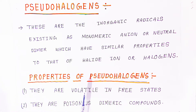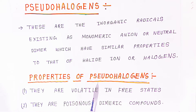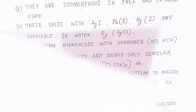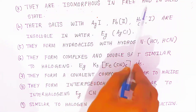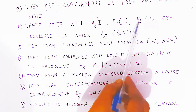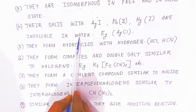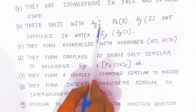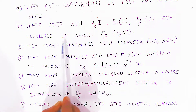Now we are going to see the properties of pseudo halogens. First property: they are volatile in free state. Second: they are poisonous dimeric compounds. Third: they are isomorphous in free and in solid state. Fourth: their salts with silver, iodide, lead²⁺, mercury¹⁺ are insoluble in water, similar to silver chloride.